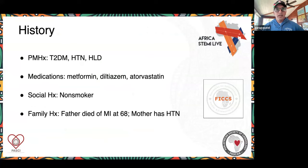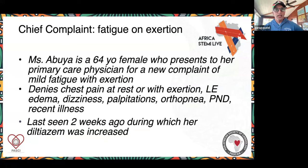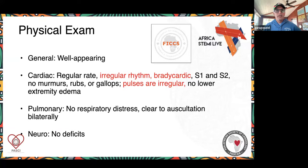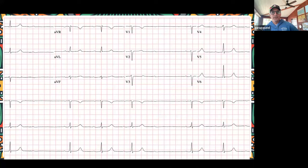Let's talk about this case. A 64-year-old female presenting to her primary care doctor with fatigue especially on exertion, denying chest pain, lower extremity swelling, dizziness, or palpitations. There was a recent illness two weeks ago during which her diltiazem was increased in the outpatient office. The cardiac exam is irregular. Here's our rhythm strip — who wants to take a stab? We're hearing complete heart block, Wenckebach, Mobitz type one, and second degree Mobitz type one.